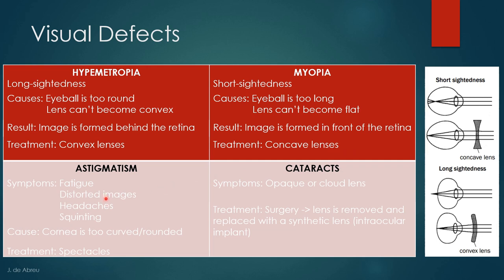Astigmatism is when the cornea is too curved or rounded, which can cause fatigue, distorted images, headaches, and squinting. It is treated with spectacles. Cataracts is when an opaque or cloudy substance forms over your lens, preventing you from seeing images properly because the lens should be transparent. The treatment is to remove the lens and replace it with a synthetic lens called an intraocular implant, done by surgery.